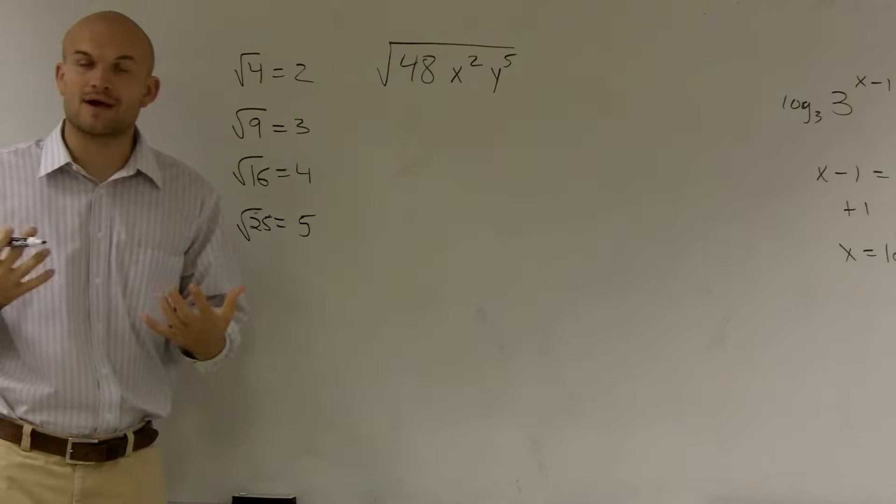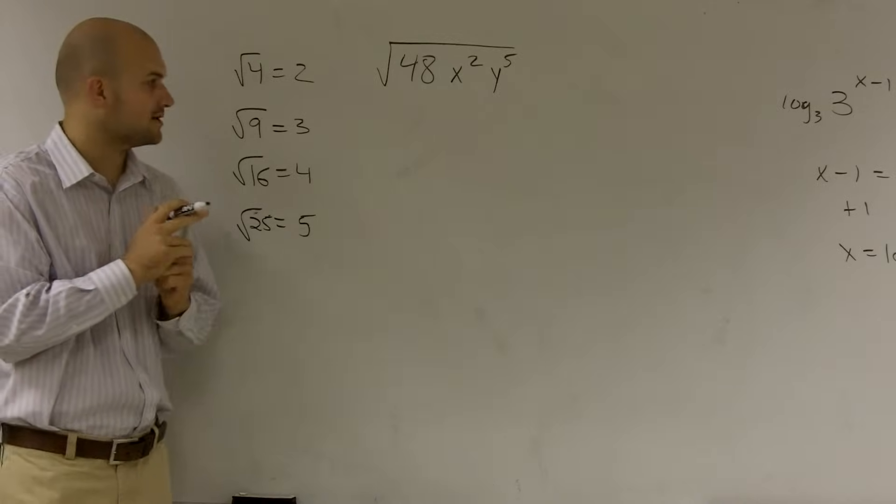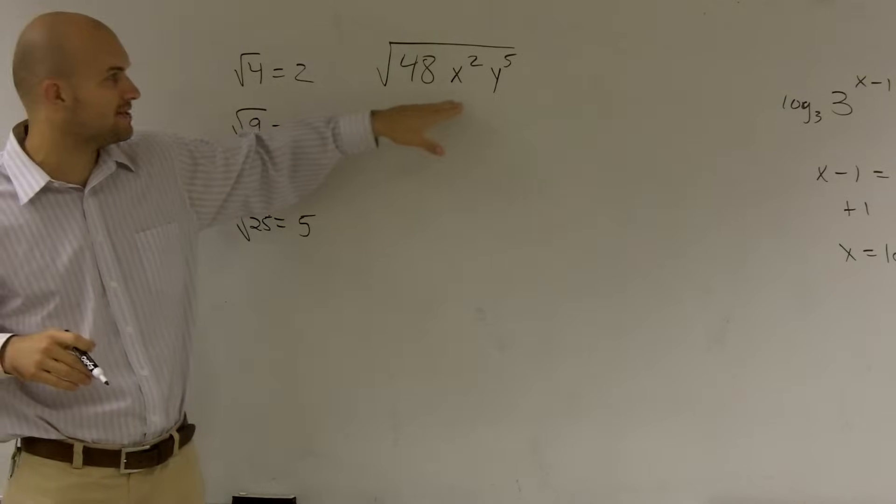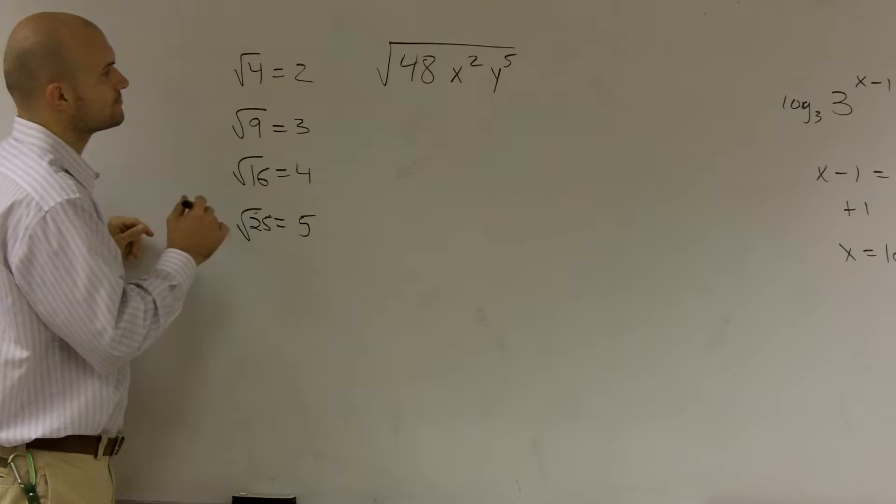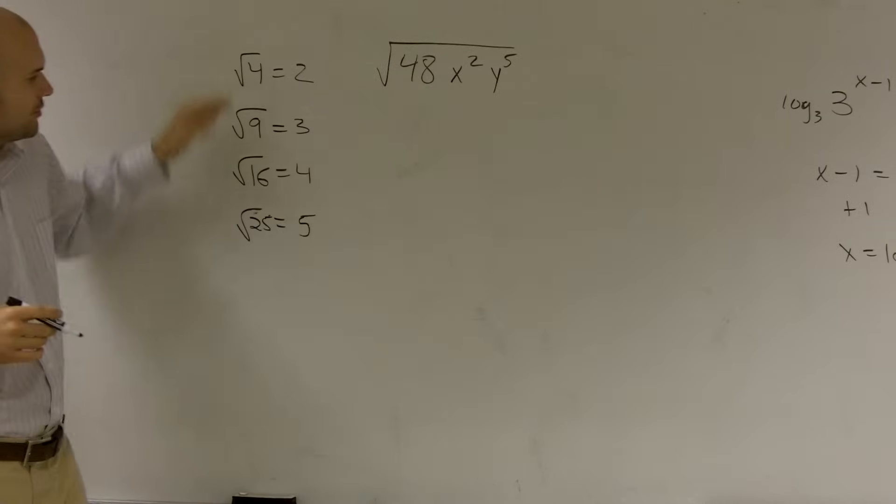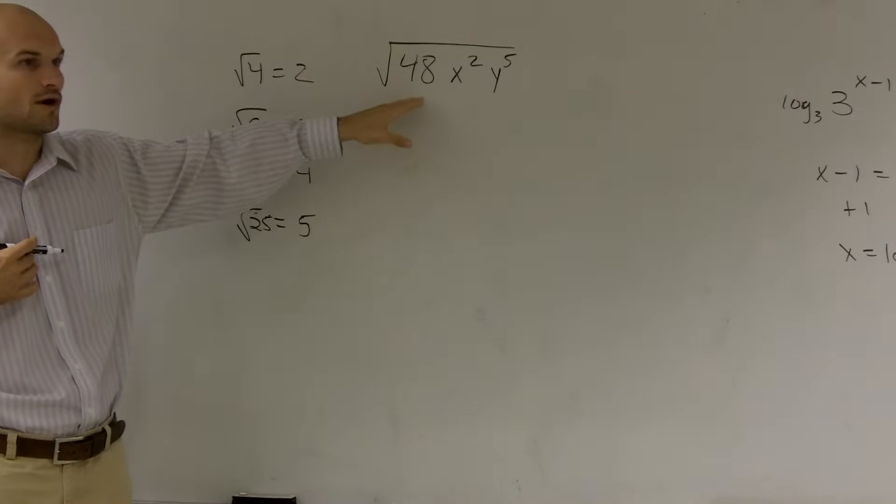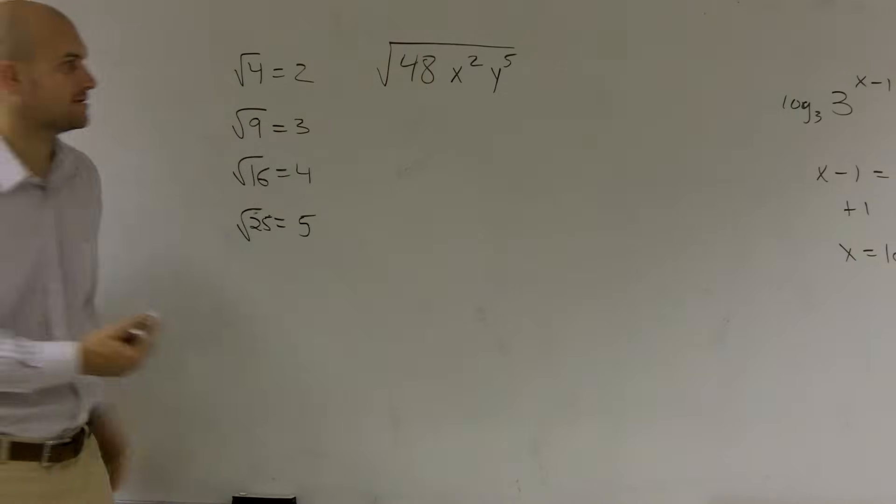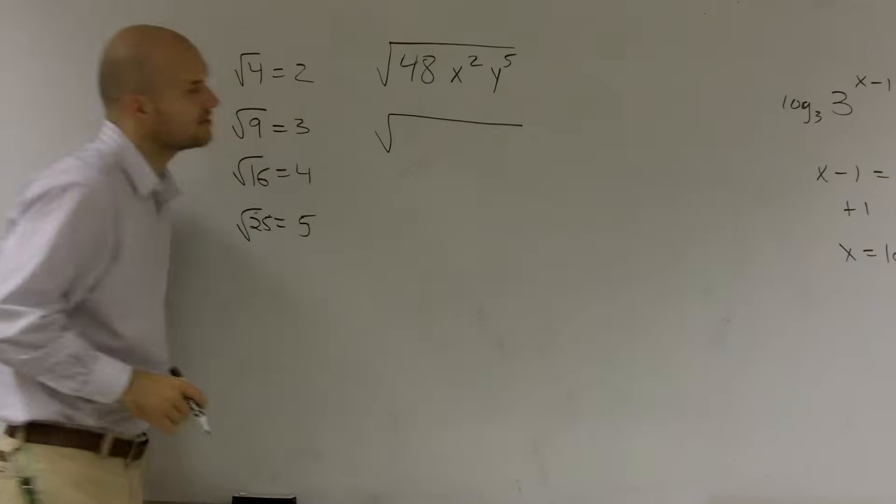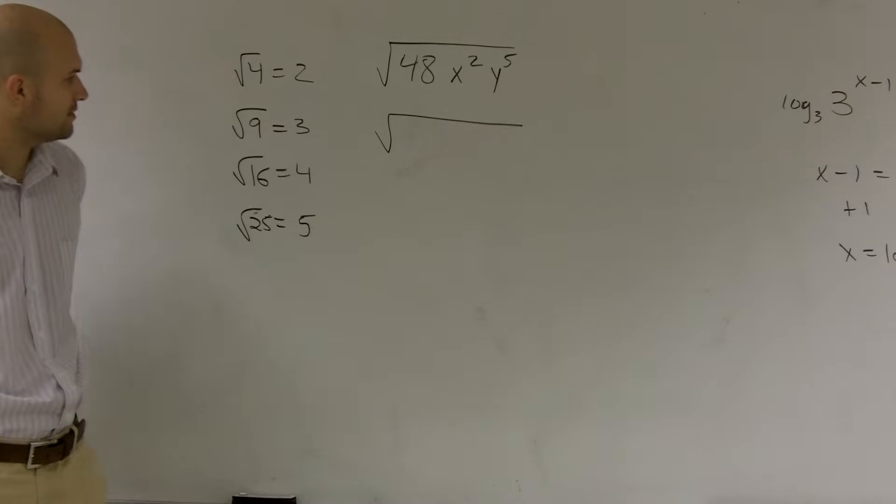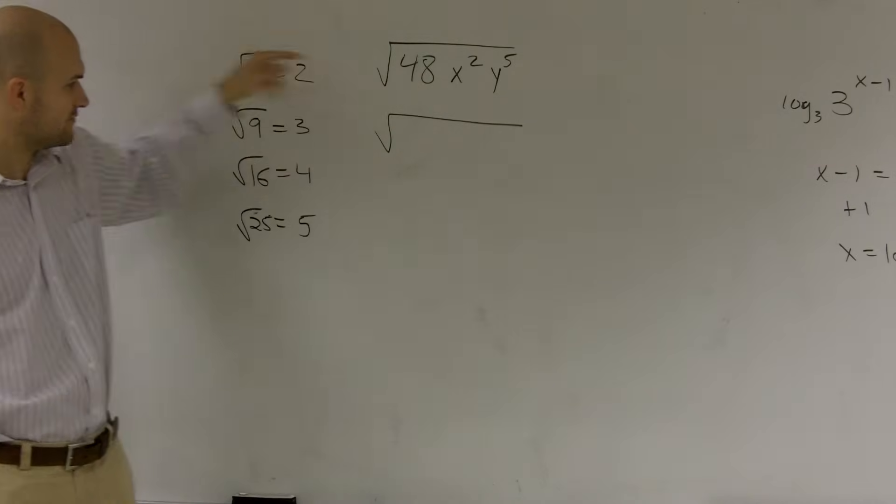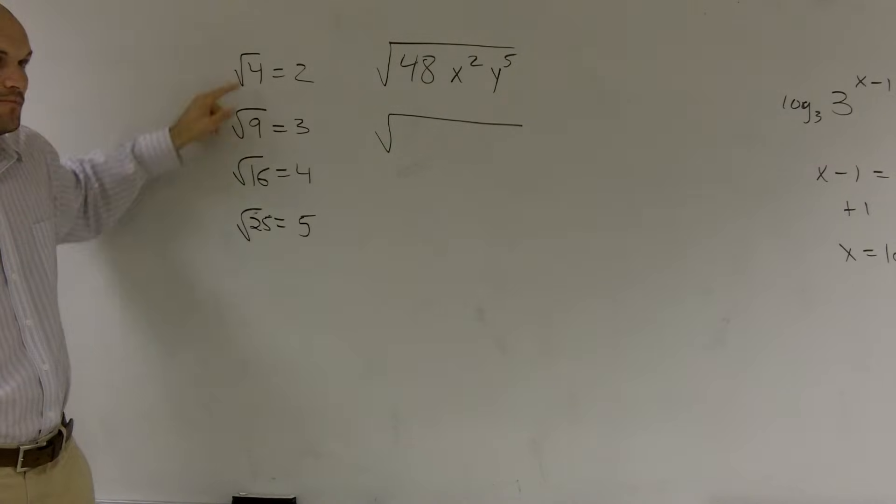Our main goal whenever you're simplifying radicals, at least the way I want to explain this, is we want to try to re-represent this problem by only using these numbers. Because we can take the square root of this. So I want to see, can I transform the square root of 48 by using these numbers, rewrite it? Can I break down the factor of 48 as using the multiple of one of these numbers?